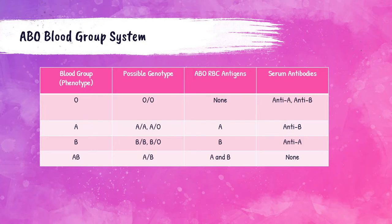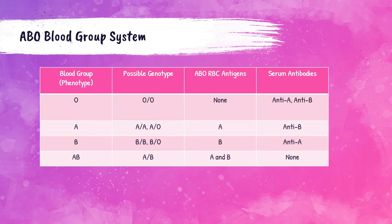The ABO blood group system phenotypes are listed on the left-hand side of this table, with possible genotypes in the second column, ABO antigens present on red blood cells in the third column, and corresponding naturally occurring antibodies in the final column. For O blood group patients, their genotype is always OO, meaning they inherited an O gene from each parent. They have no ABO antigens on their red blood cells, but do have anti-A and anti-B antibodies in their serum. So if an O blood type person receives blood from an A or B blood type donor, their corresponding antibodies will agglutinate, causing a transfusion reaction.